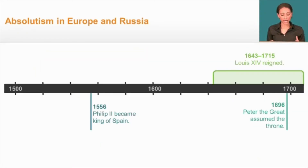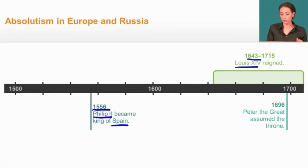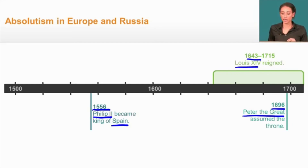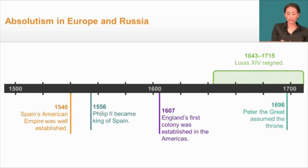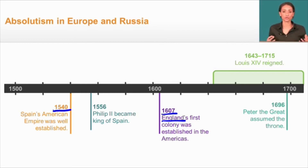When we look at a timeline of how these leaders developed in comparison to one another: in 1556, Philip II becomes one of the early absolute rulers in Spain. About 100 years later, in France, Louis XIV reigns for well over 70 years. Within about 50 years of Louis XIV's throne, Peter the Great takes office in 1696. These absolute rulers wanted to take control not only of their own countries but hoped to expand their territories. In 1540, before Philip II even became king, Spain's American empire was already well established, and by 1607, England's first colony was established in the Americas.